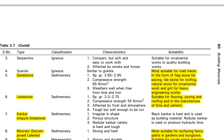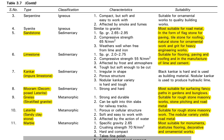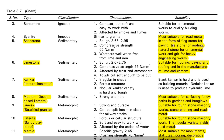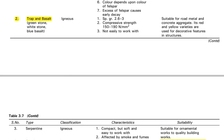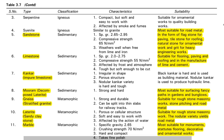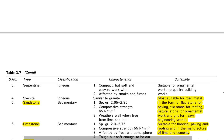Serpentine is classified under igneous rock and is suitable for ornamental works. Syenite is also an igneous rock and is most suitable for road metal. Note that trap and basalt is simply 'suitable' for road metal, but syenite is 'most suitable' for road metal. In competitive examinations, when asked what is the most suitable stone for road metal, choose syenite. If syenite is not an option, choose trap and basalt.